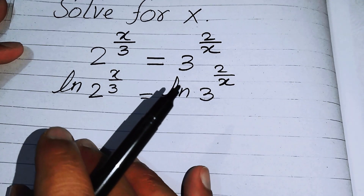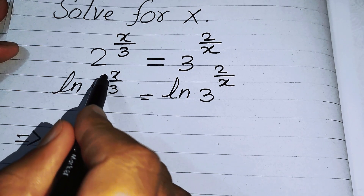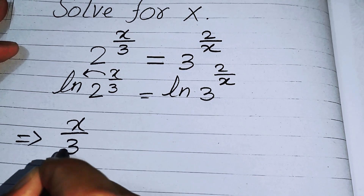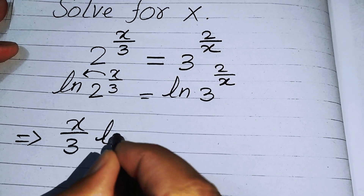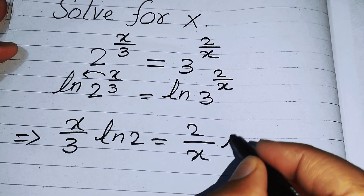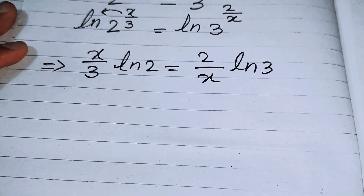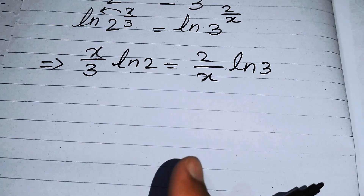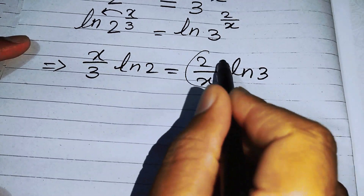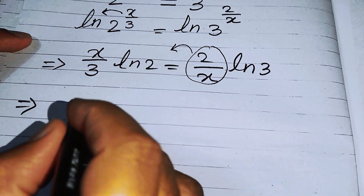After that we will apply the property of log, where the exponent moves to the front. So we get x over 3 times log 2 equals 2 over x times log 3. After that we will take all the terms involving x to the left hand side.